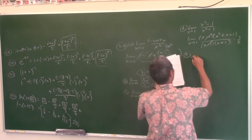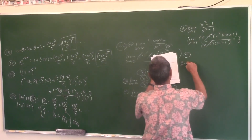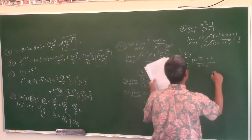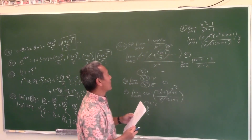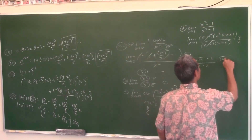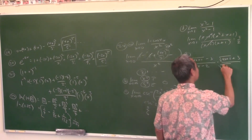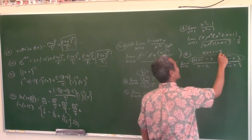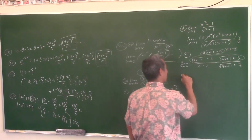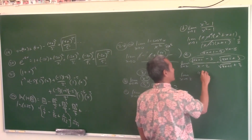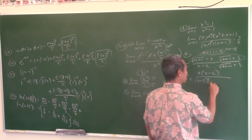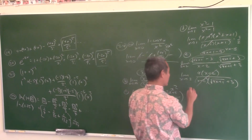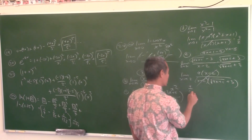Limit as x approaches 2 of (√(4x+1) − 3)/(x − 2). Plugging in 2 gives 0/0, and there's a radical, so multiply top and bottom by the conjugate. The numerator becomes (4x+1) − 9 = 4x − 8 = 4(x−2). After careful algebra, the (x−2) terms cancel. Now plug in x = 2: you get 4/(3+3) = 4/6 = 2/3.